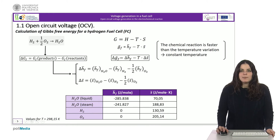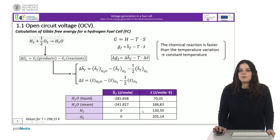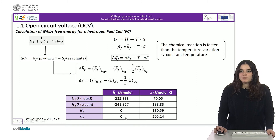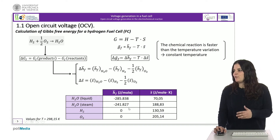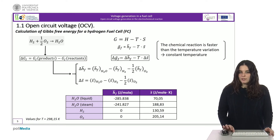In the table, we can see the values of enthalpy and entropy at a temperature of 25 degrees Celsius for each element involved in the reaction. Since we have established this convention, the enthalpy of hydrogen and oxygen formation is 0. For water, we distinguish the values in the case it is considered as liquid or in the form of vapor. With these values, we can calculate the Gibbs free energy at 25 degrees Celsius.